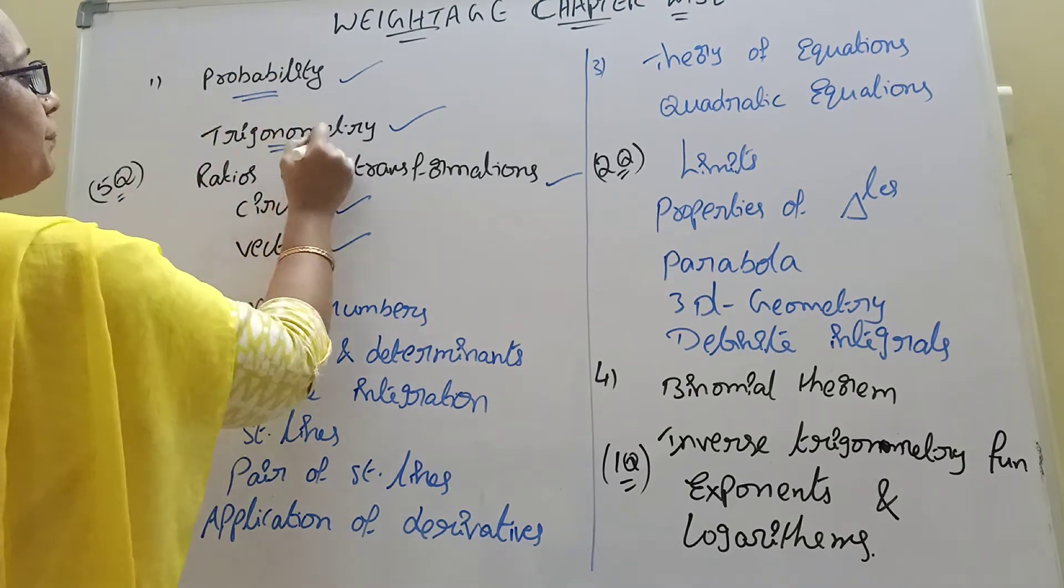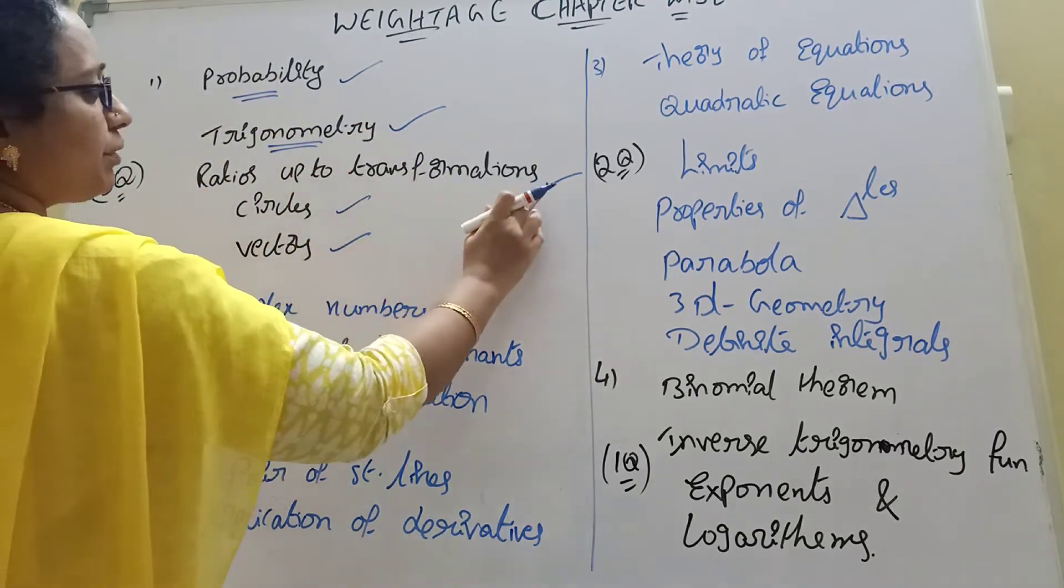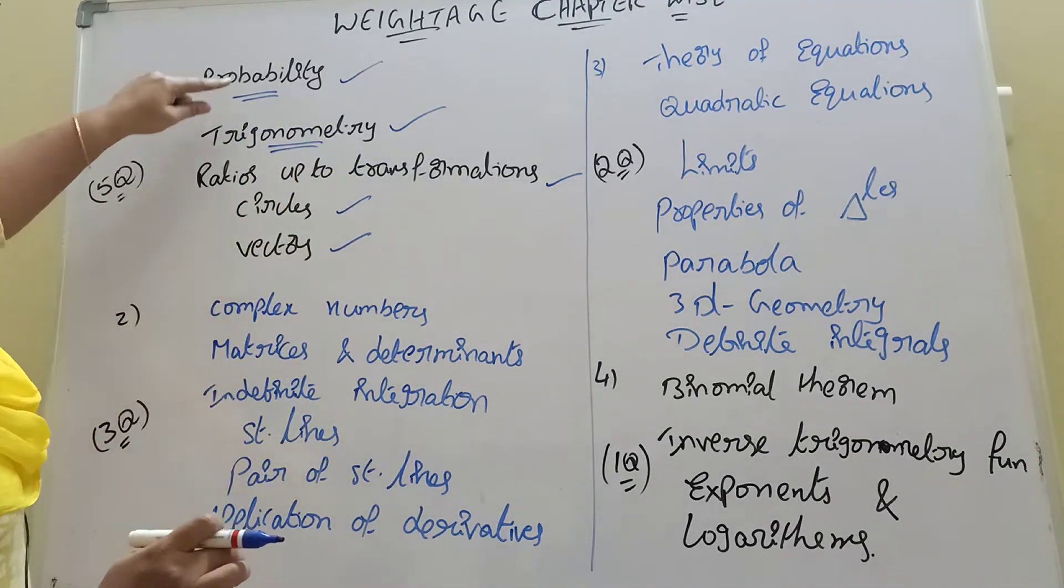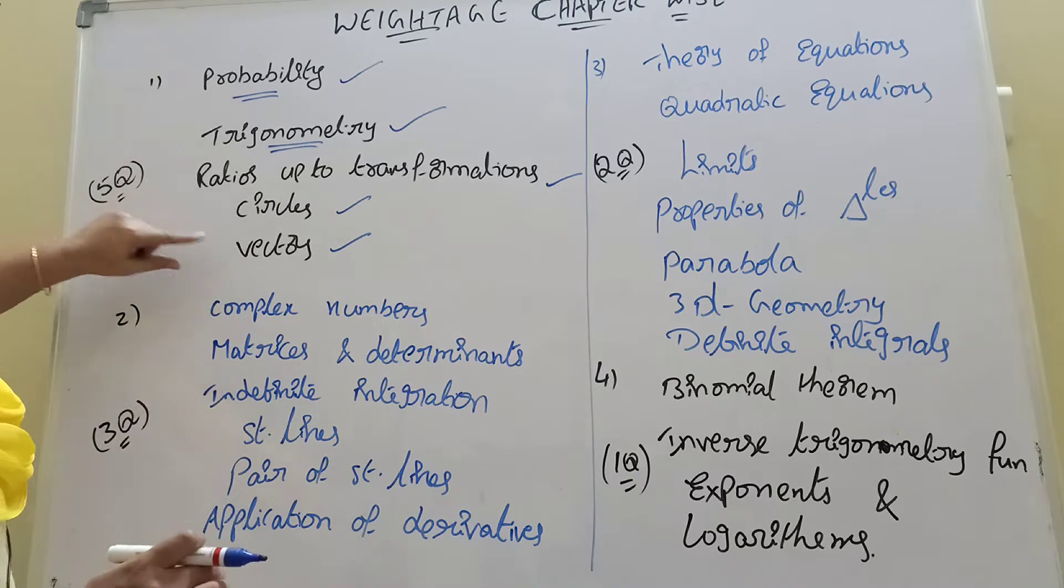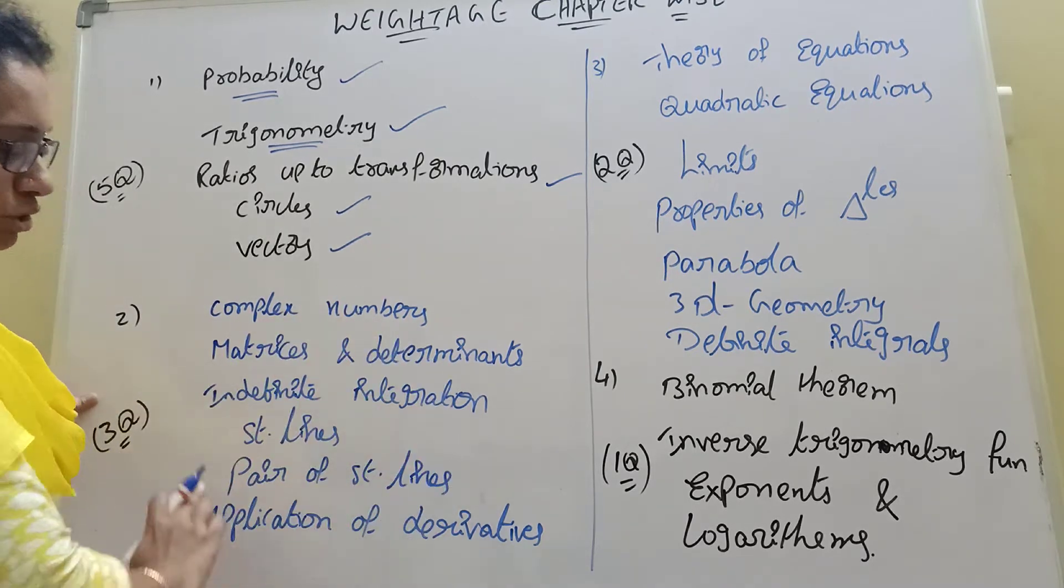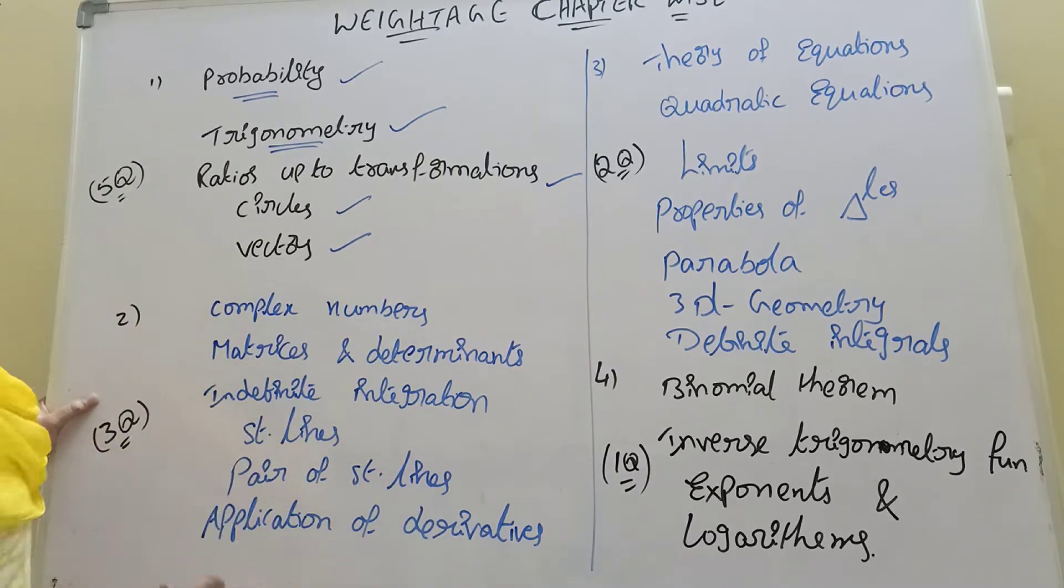Trigonometry and rest of the transformations. The complex numbers, matrices, and vectors are four chapters. Now in three chapters, we take 15 chapters, 20 marks. That's why we have 3 questions for each of us.